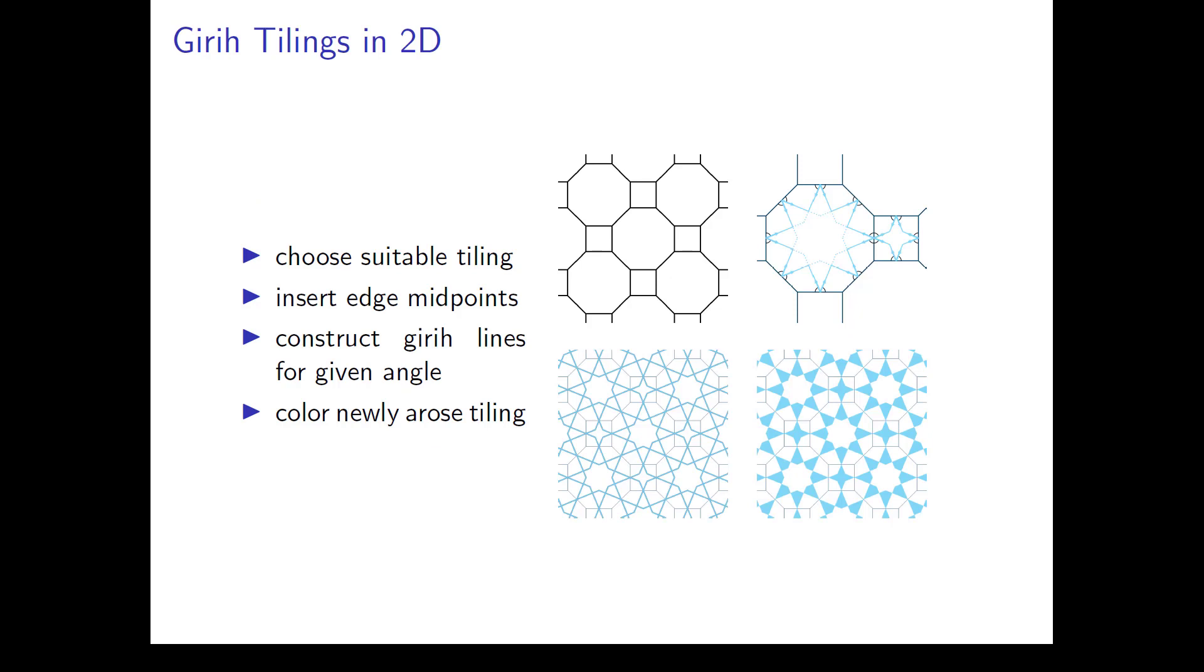Another set of tilings with even valences only are Geary tilings. A common construction works as follows. Choose a suitable tiling of the 2D plane. In the image, a tiling made from octagons and squares is shown. At each edge midpoint, construct two crossing lines with a given angle to the edge. In each face of the underlying tiling, extend these lines until they intersect with other lines. By construction, the tiling created by these new lines is always two-colorable.